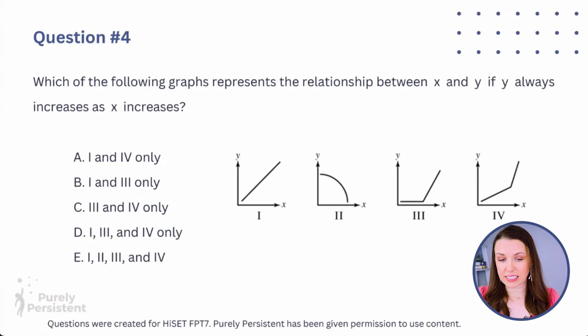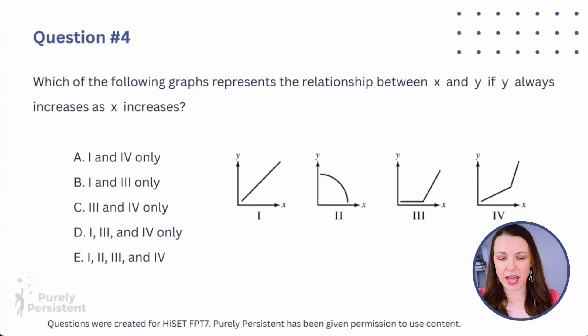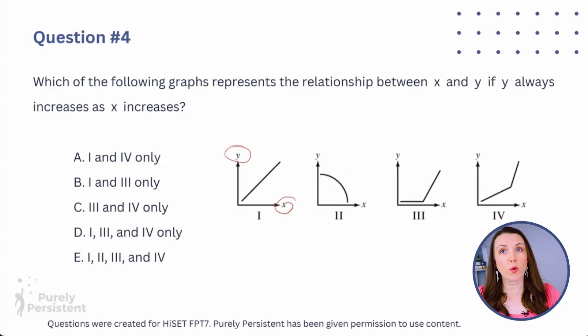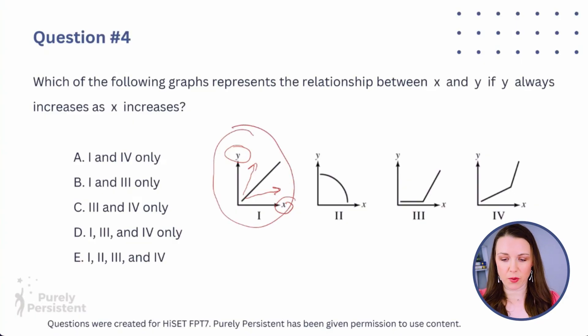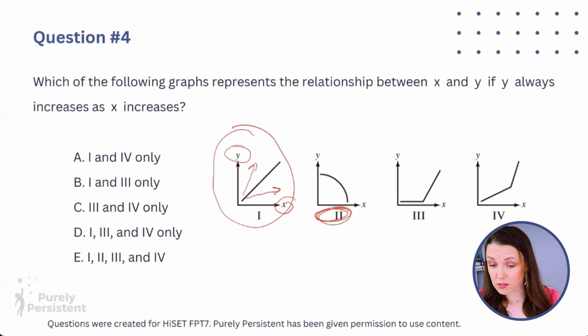Question four: which of the following graphs represents the relationship between x and y if y always increases as x always increases? Focus on the graphs themselves before looking at the answer choices. The y-axis is vertical and x-axis is horizontal on all four. In graph one, y is always going up and x is always going to the right — so graph one qualifies. In graph two, y is going down, not up — so that's out.